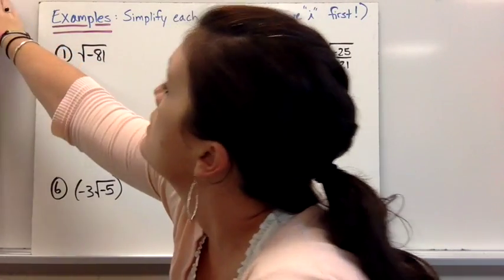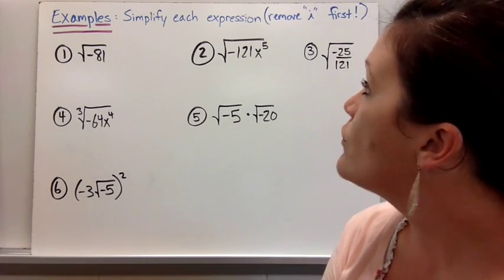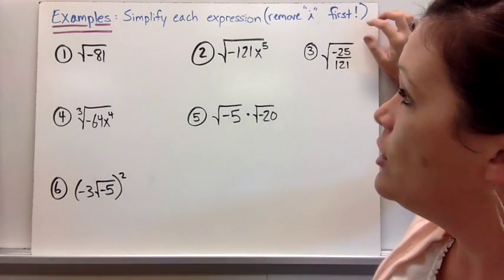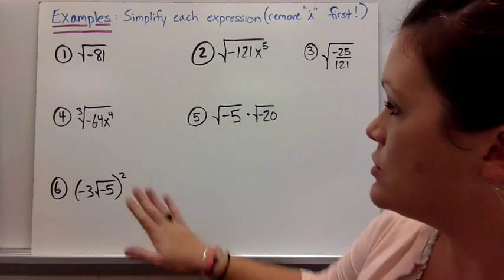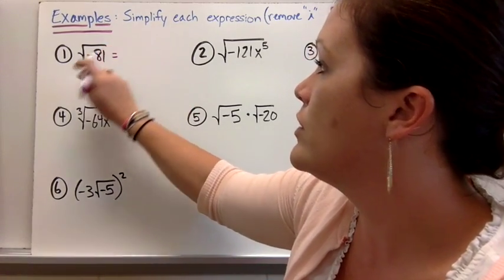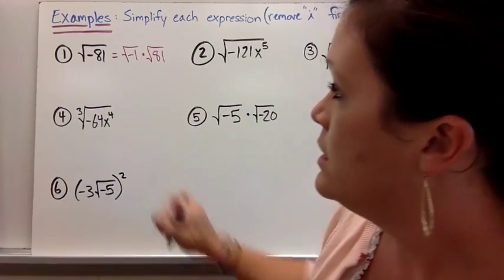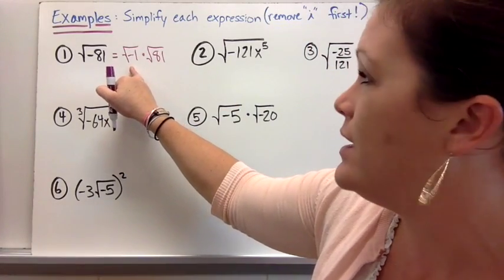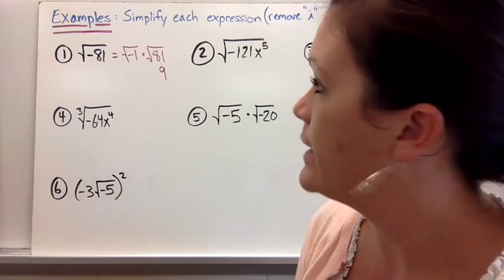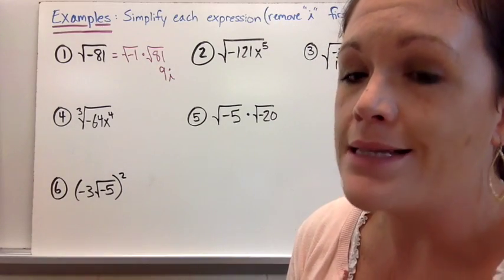That was one type of question. What if there are radicals that we have normally said are not possible? Now they are. When you see a negative underneath a radical, remove the i first before doing any more simplifying. You want to treat it as the square root of negative 1 times the square root of 81. The square root of negative 1 is i, and the square root of 81 is 9. So the answer is 9i — written like 9x, with the 9 as the coefficient first.